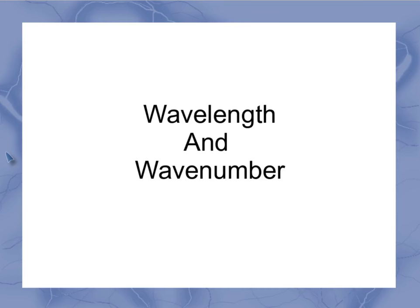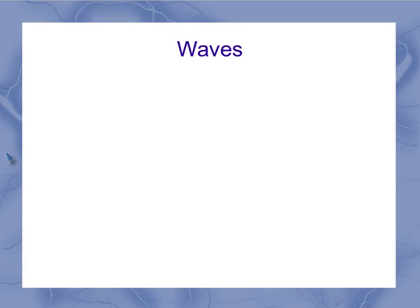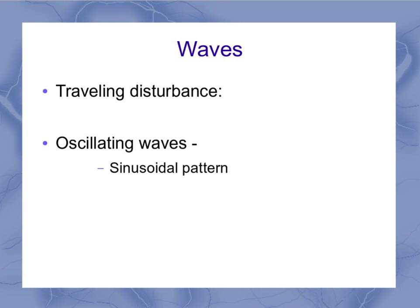Now we're going to look at wavelength and wave number. Remember, a wave is a traveling disturbance. And an oscillating wave is a traveling disturbance that has a sinusoidal pattern. As a matter of fact, the wave equation we're using in physics has that sine as the function inherent in that equation.